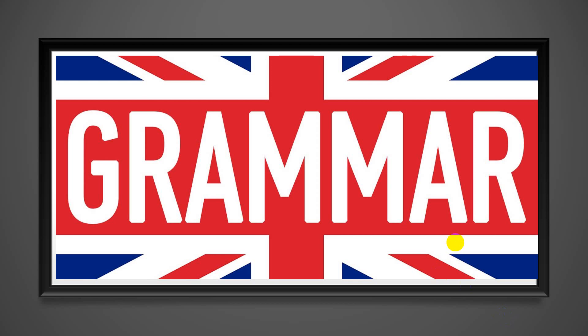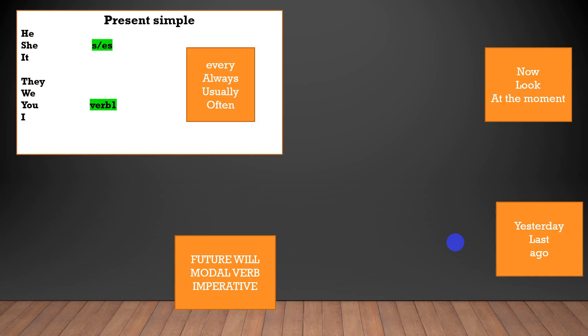Let's have a look at this. We have the presence of old. When I have a singular subject, as we studied before, I can add -s or -es to the end of the verb. When I have they, you, or I, I keep the verb without adding anything. For example: He plays football every day. They play football every day.